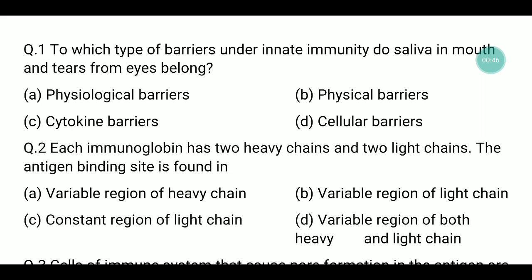Question number two: each immunoglobulin has two heavy chains and two light chains. The antigen binding site is found in which region? An immunoglobulin is a type of protein with two heavy and two light chains. The upper region is the variable region and the lower is the constant region. The answer is option D: variable region of both heavy and light chains.